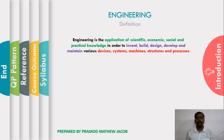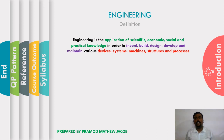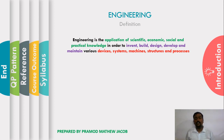This definition consists of three parts. The first part is the application of some sort of knowledge — scientific, economic, social, and practical. Scientific knowledge means knowledge that comes from previous experience and should be a proven fact.